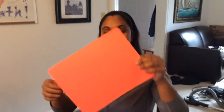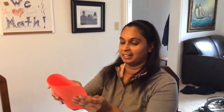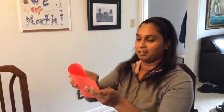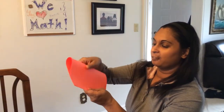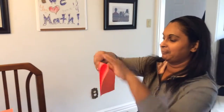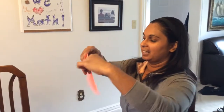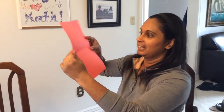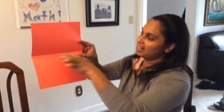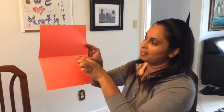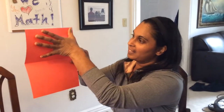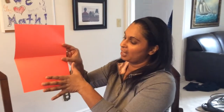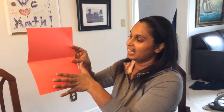This right here is a rectangle. I'm going to find the middle and fold it. And there I have another line of symmetry. If I look on this side, it's the same as this side.